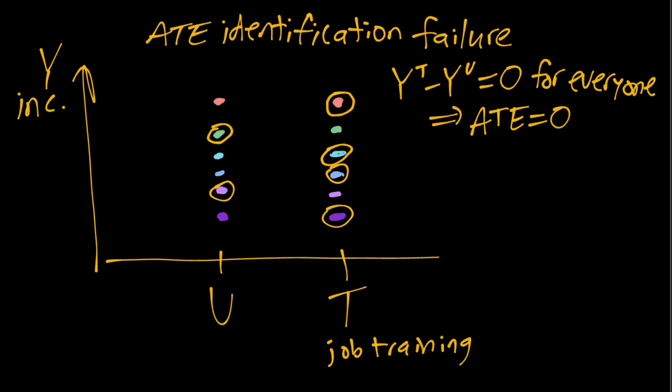If people complied perfectly—so we tell them to go, they go; we tell them not to go, they don't go—then you can see if we average these outcomes in the control group here and we average the treatment group outcomes, we'll end up in both cases with an average right in the middle, and we would estimate an average treatment effect of zero, which is exactly what we would want.